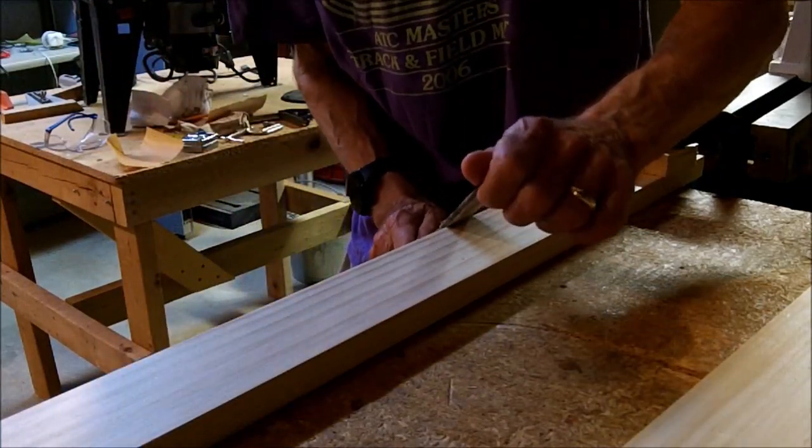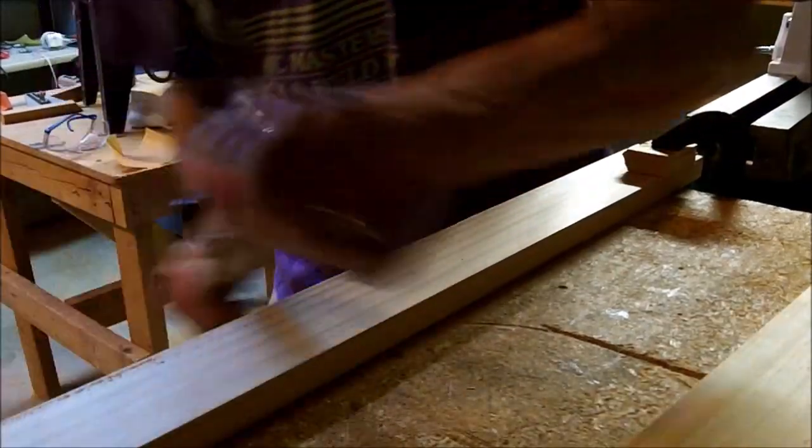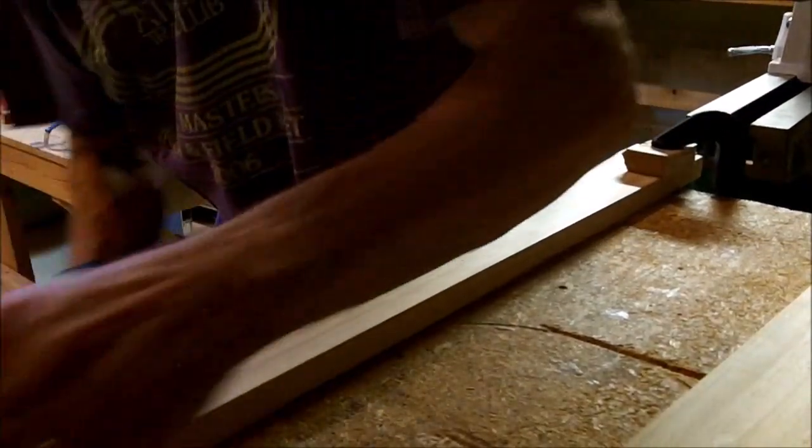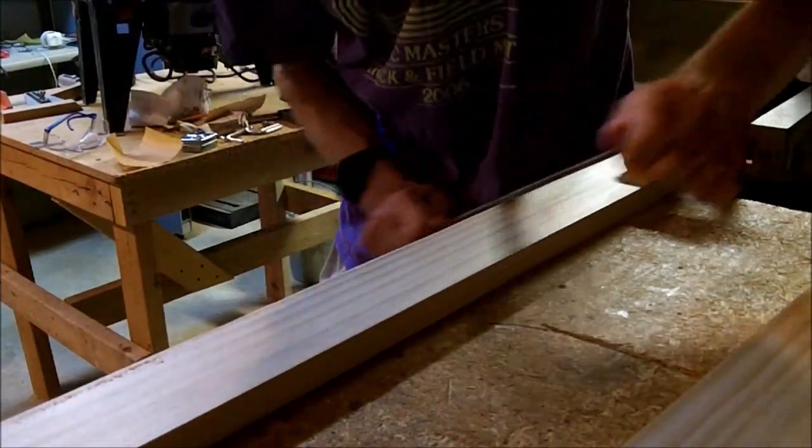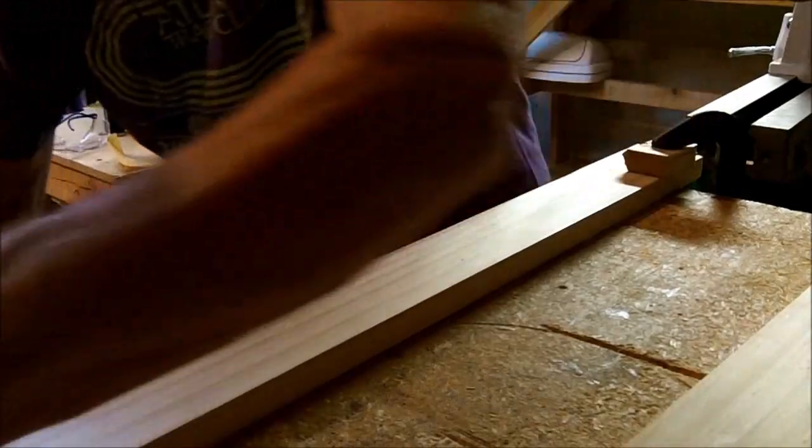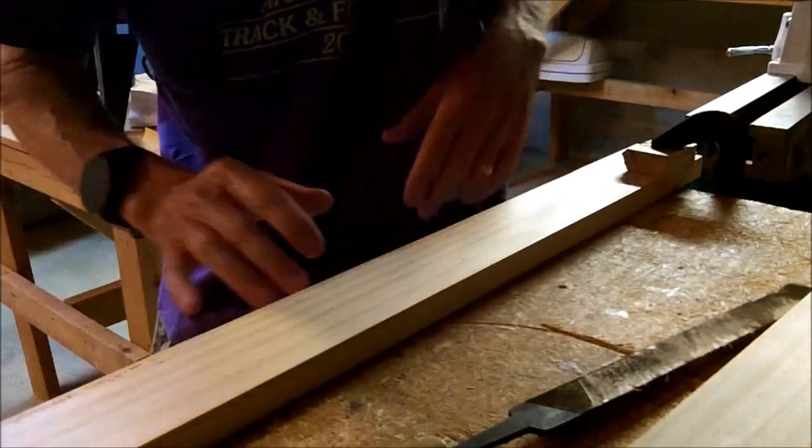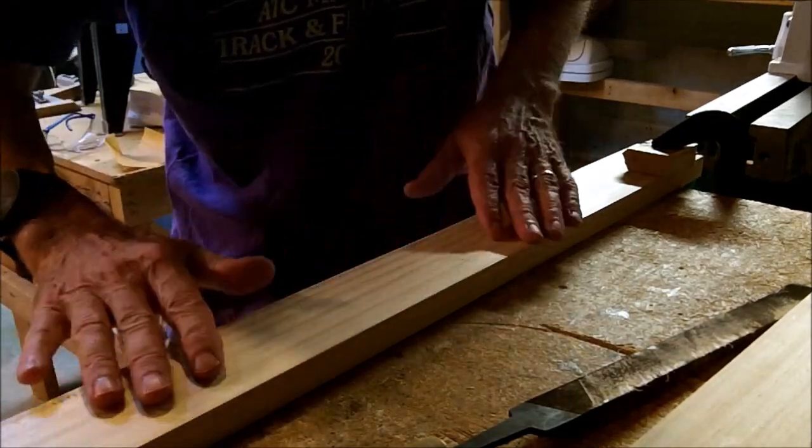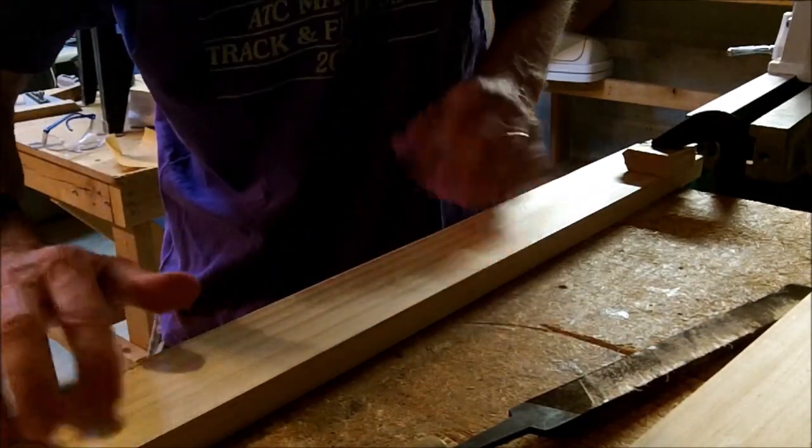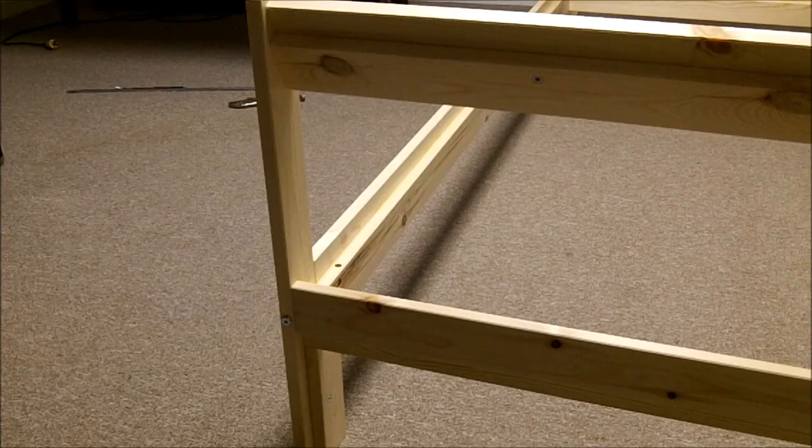Once I've done that on all four edges of each board, what I'll do is come back with some sandpaper and sand. Go over the board. It's already pre-sanded or pretty smooth but just to smooth it out.